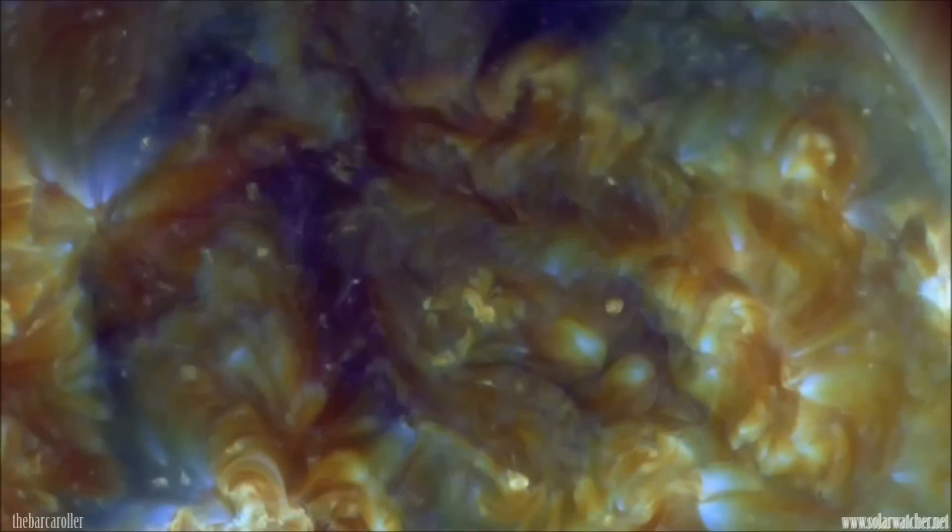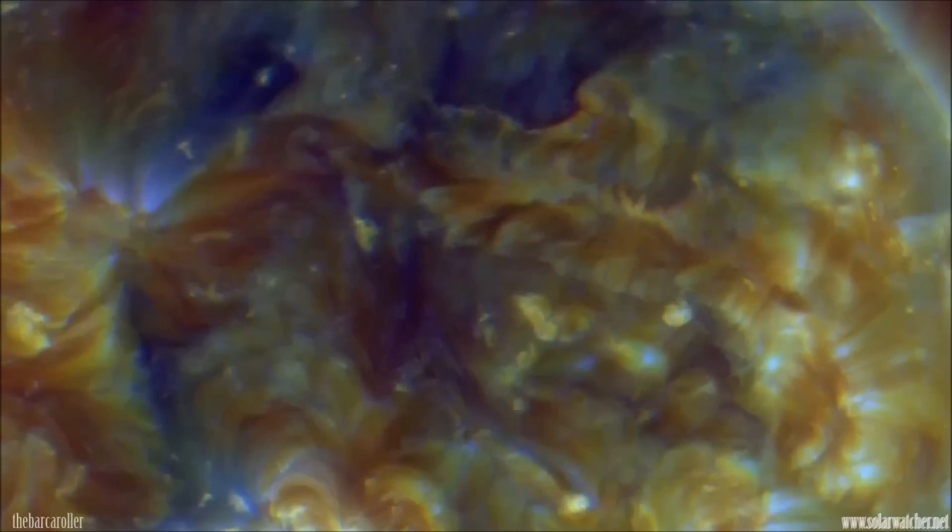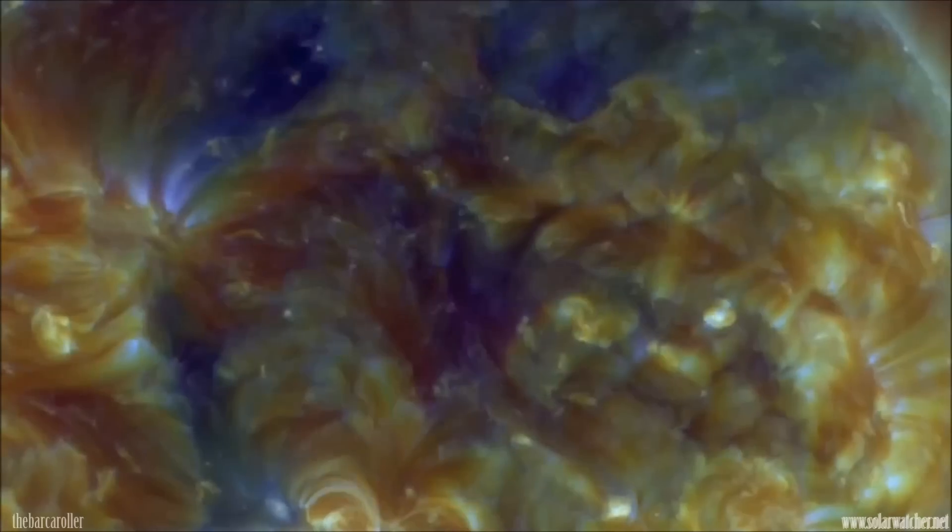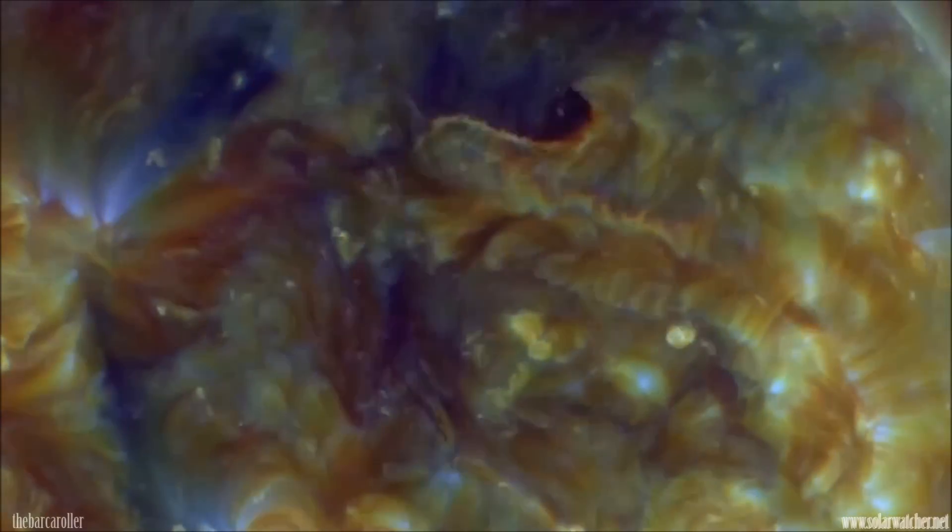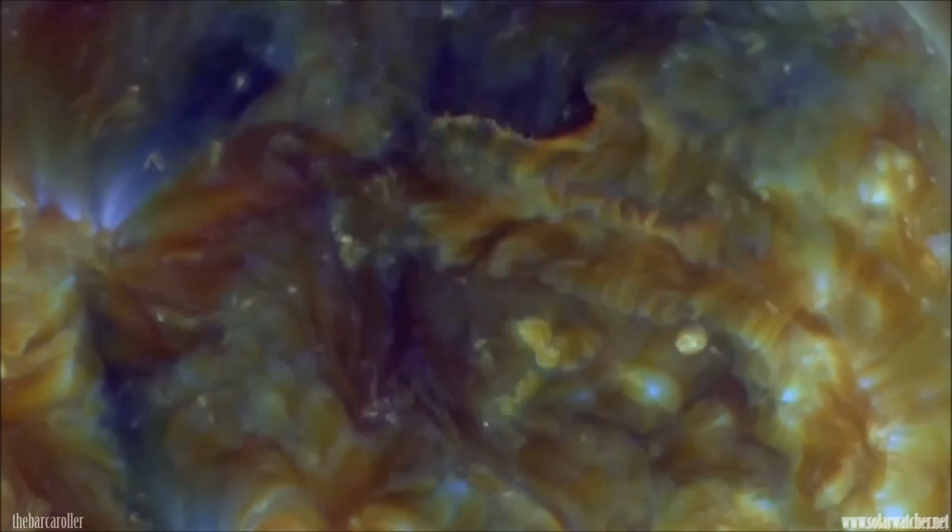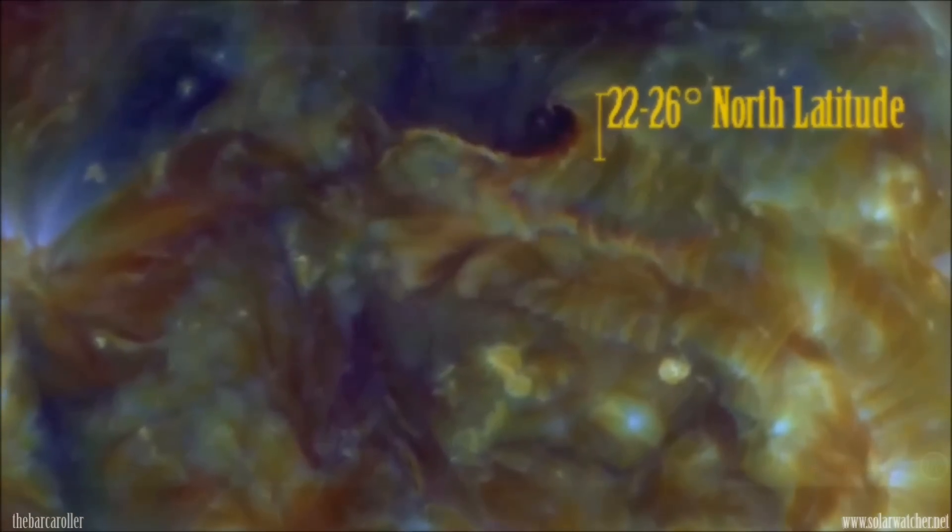A significant event took place back on December 31, 2014, where a fairly powerful eruption took place on the solar corona and disturbance. The interesting aspect is that this took place on the solar corona from 22 to 26 degrees north latitude, which is coincidentally the areas of focus during this watch period.